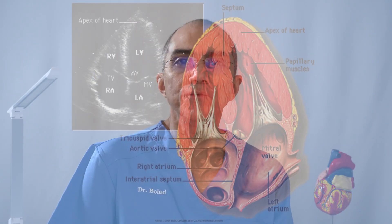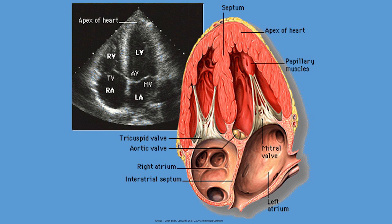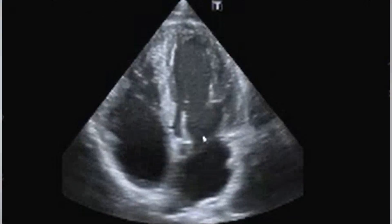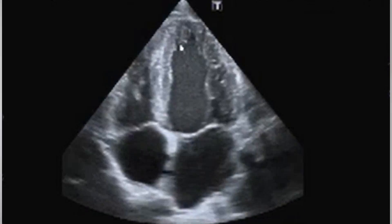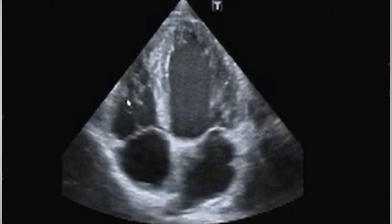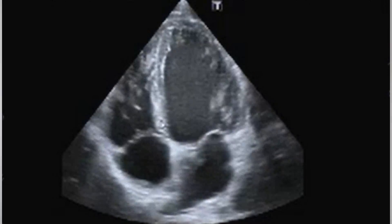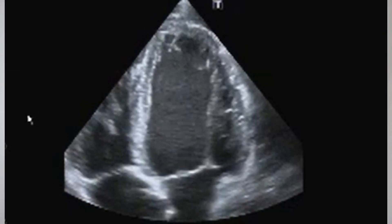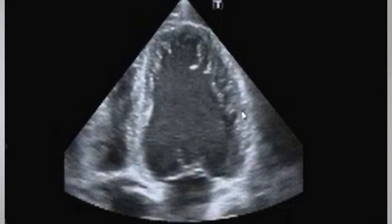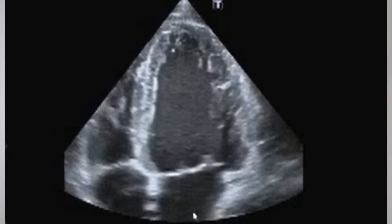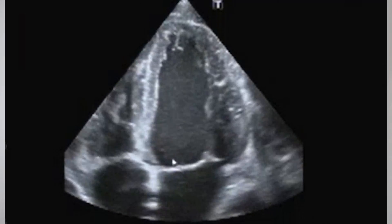I then move my transducer to the apex of the heart to get what we call the apical four-chamber view. This is how it looks, with the left side of the heart displayed on the right side of the screen and the right side of the heart displayed on the left side of the screen. You can see the left atrium, the mitral valve, the left ventricle, the right ventricle, and the right atrium. I then zoom into individual chambers to assess them and perform measurements, concentrating on the left ventricle and its walls, and clearly seeing the anterior and posterior leaflets of the mitral valve.